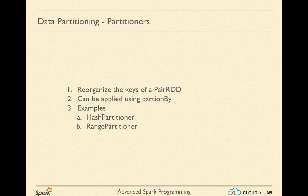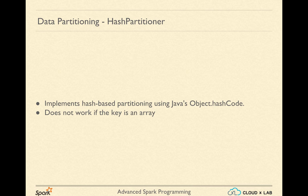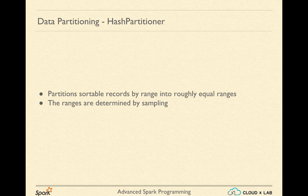Partitioners are classes which specify the criteria to reorganize the keys of a key-value RDD or pair RDD. Examples of partitioners are HashPartitioner and RangePartitioner. HashPartitioner implements hash-based partitioning using Java object's hashCode method. RangePartitioner partitions sortable records by range into roughly equal ranges. The ranges are determined by sampling the content of the RDD passed to it. Note that the actual number of partitions created by RangePartitioner might not match the partitions parameter in cases where the number of sampled records is less than the value of partitions.